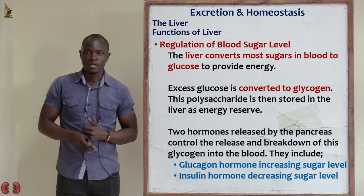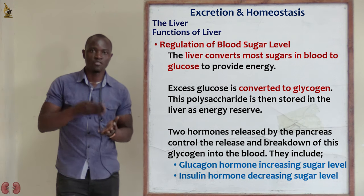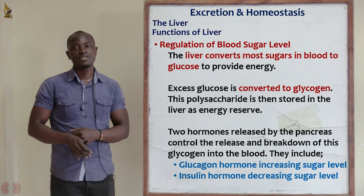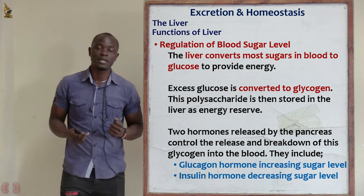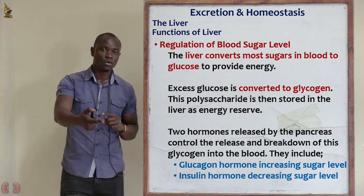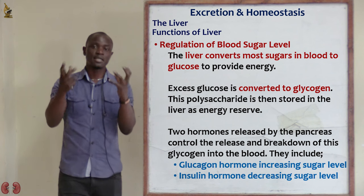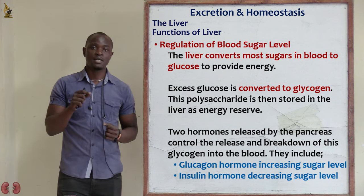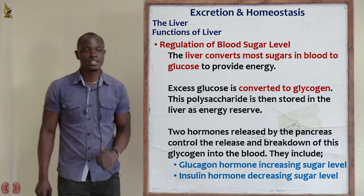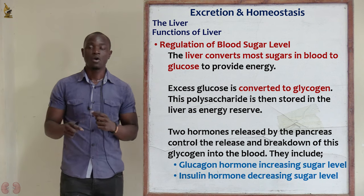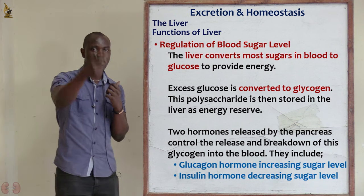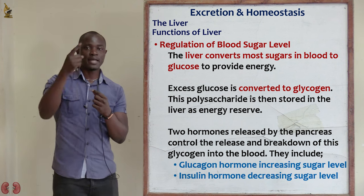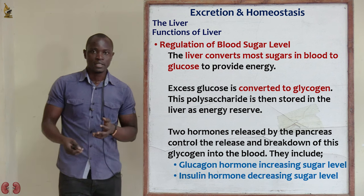The liver also regulates blood sugar level. Most sugars from meals are taken to the liver and converted to glucose. Some glucose is used to provide immediate energy, while excess glucose is stored in the liver as glycogen molecules. When one is hungry, the liver breaks down glycogen and supplies the cells of the body with carbohydrates, giving them energy.